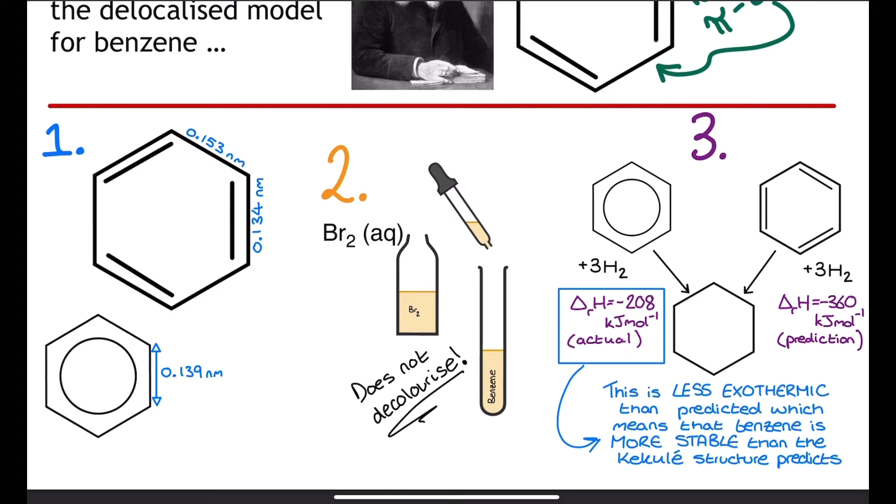The bond length between the carbon atoms in benzene is actually found to be an intermediate bond length between the carbon to carbon single bond and the carbon to carbon double bond. The nanometer values here definitely don't need to be remembered for your exam, but they might help give you a sense of perspective on what's going on.